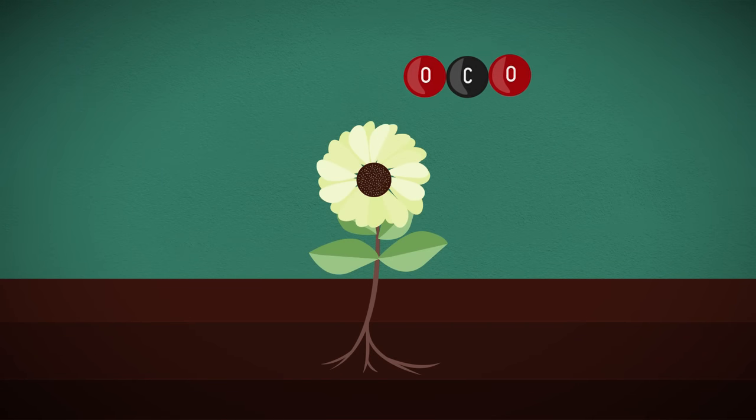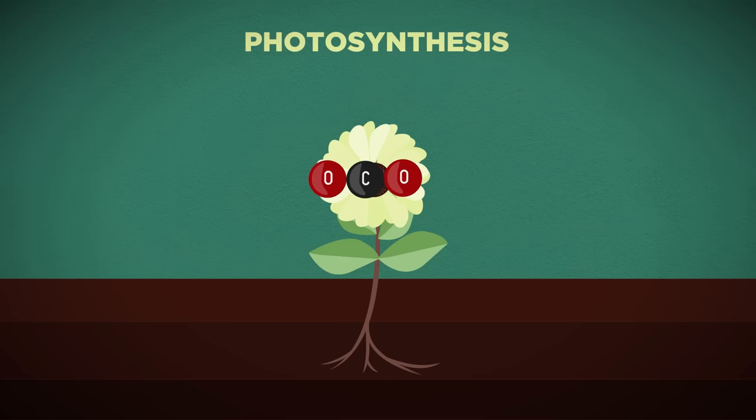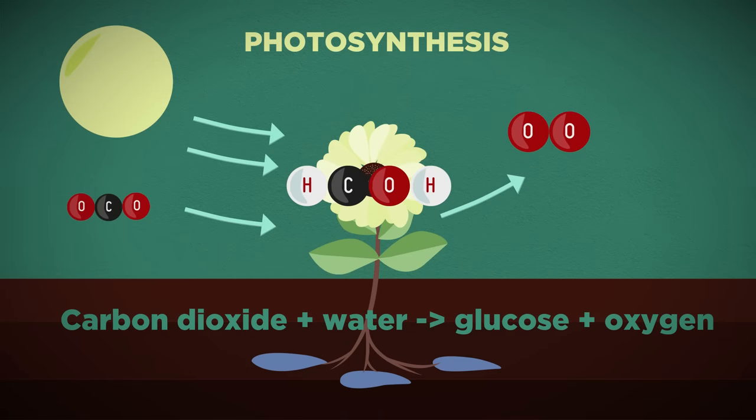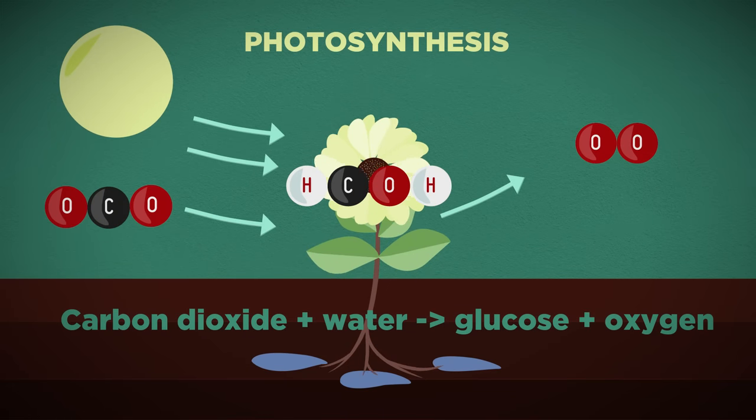Plants capture carbon dioxide during photosynthesis. Energy from the sun splits oxygen away from water and carbon dioxide forming carbohydrates used for respiration and growth.